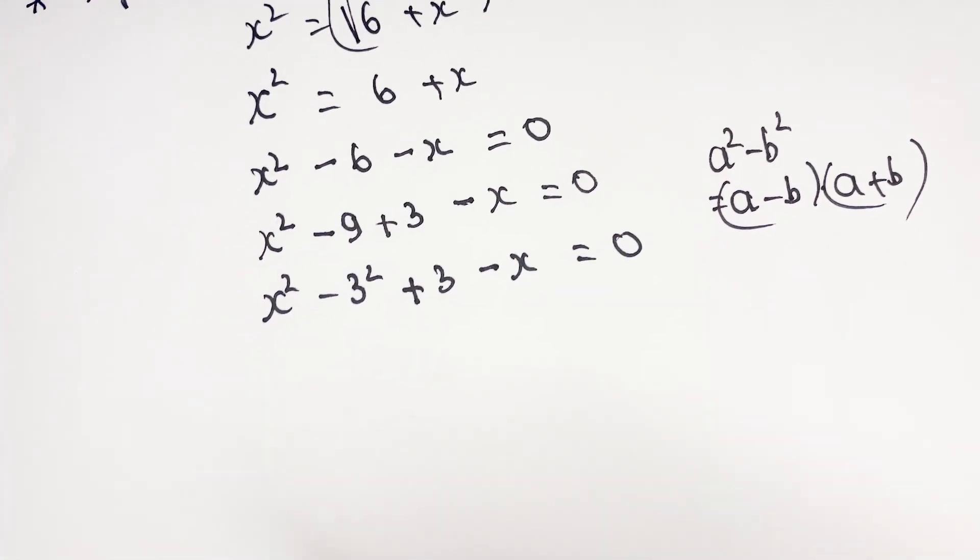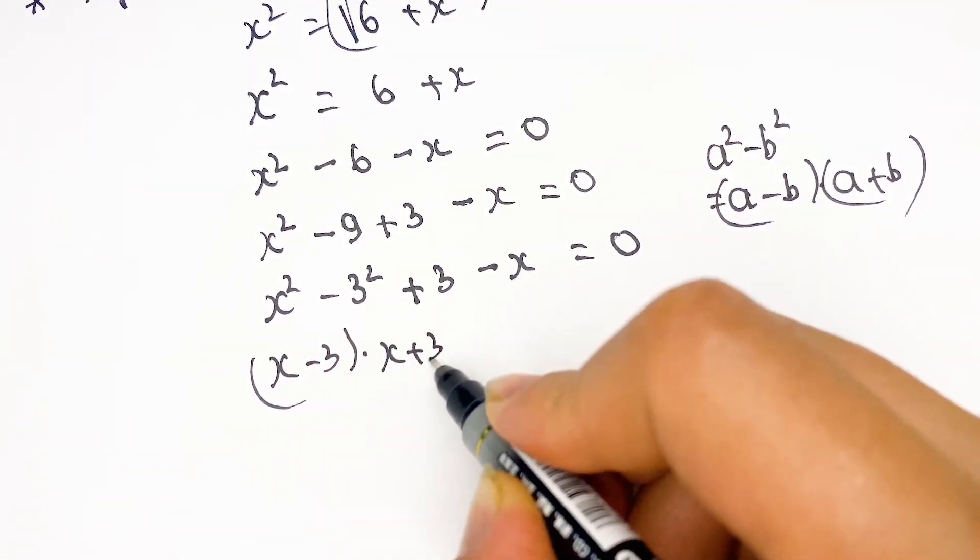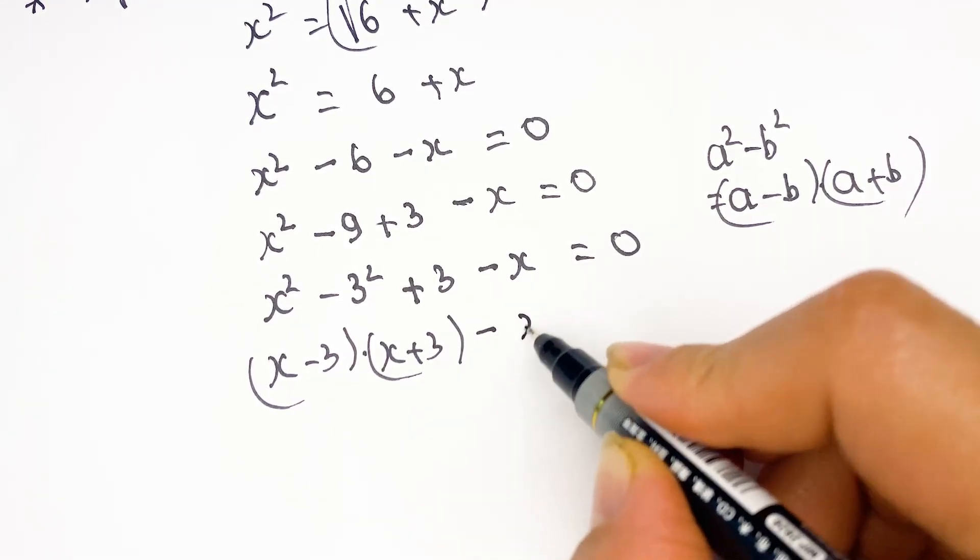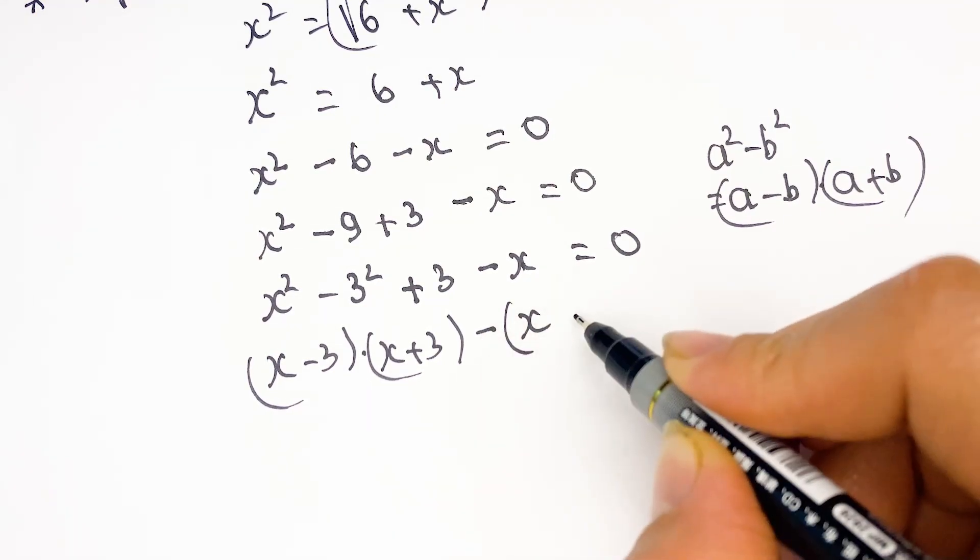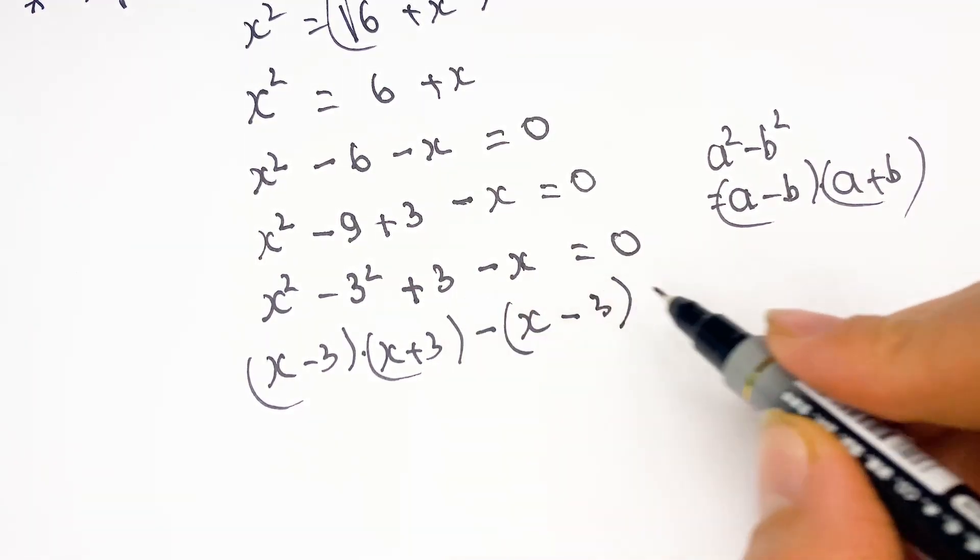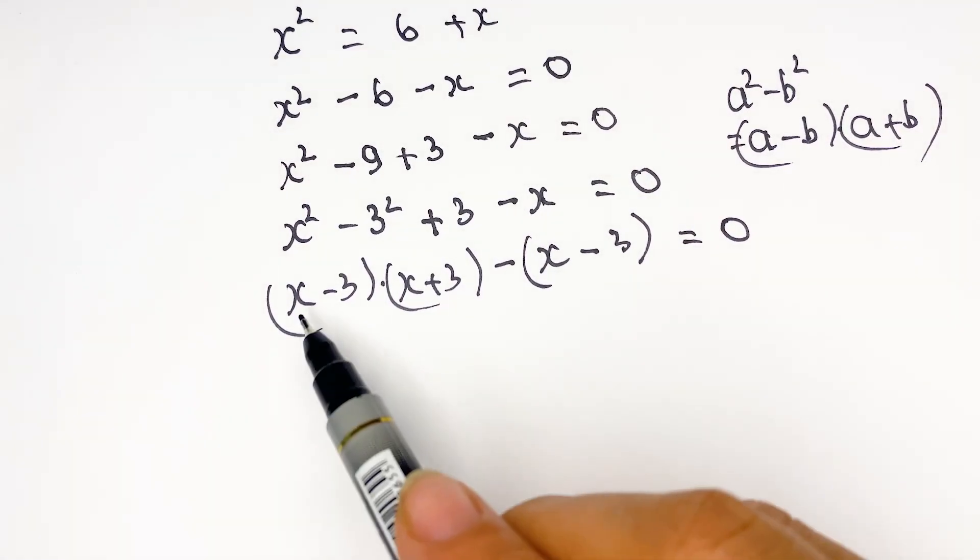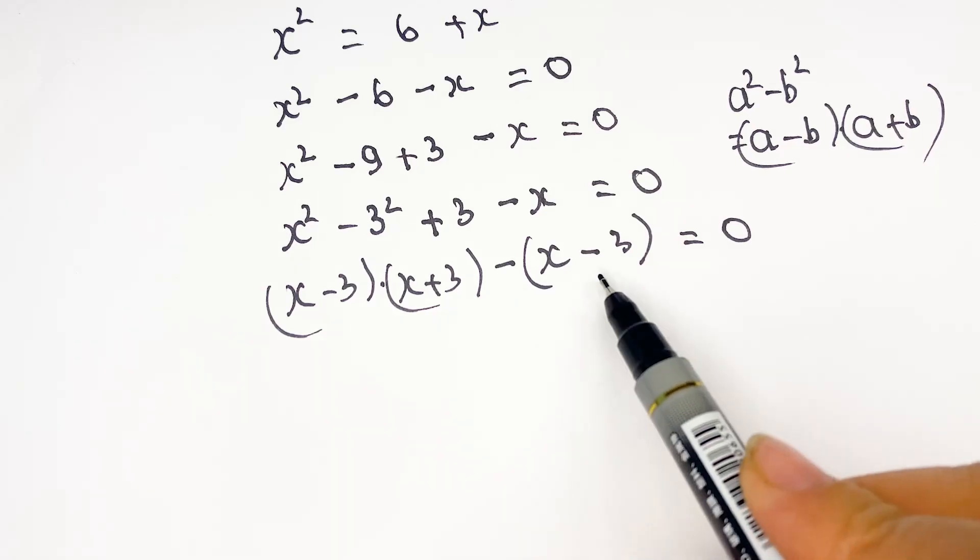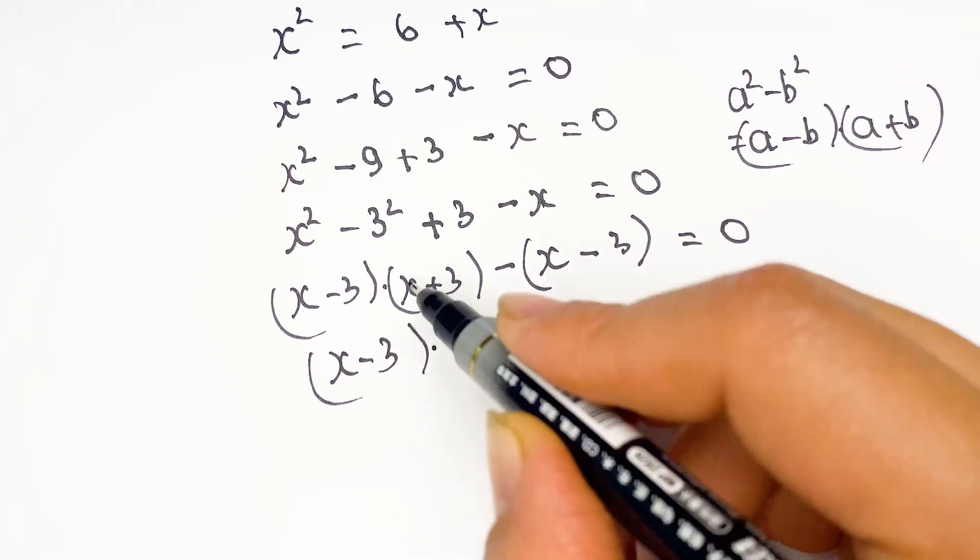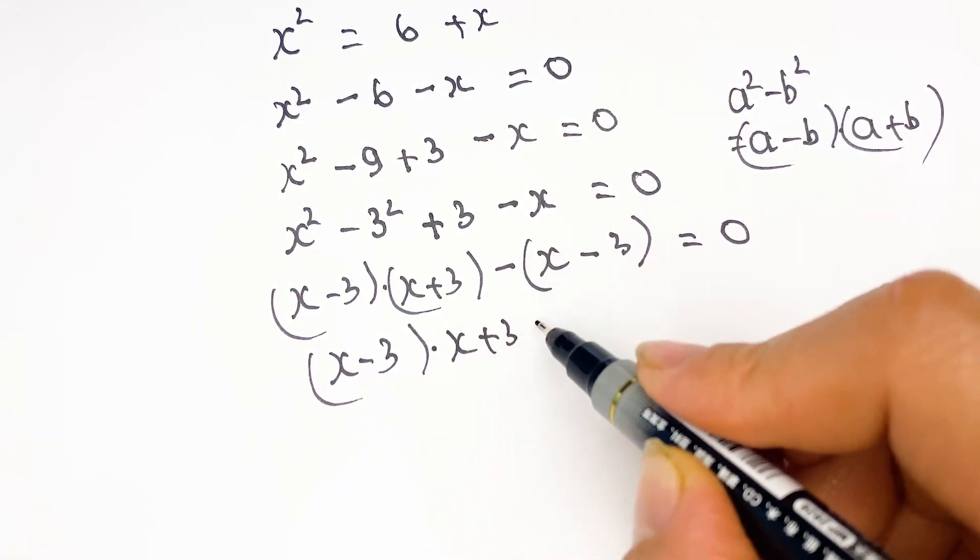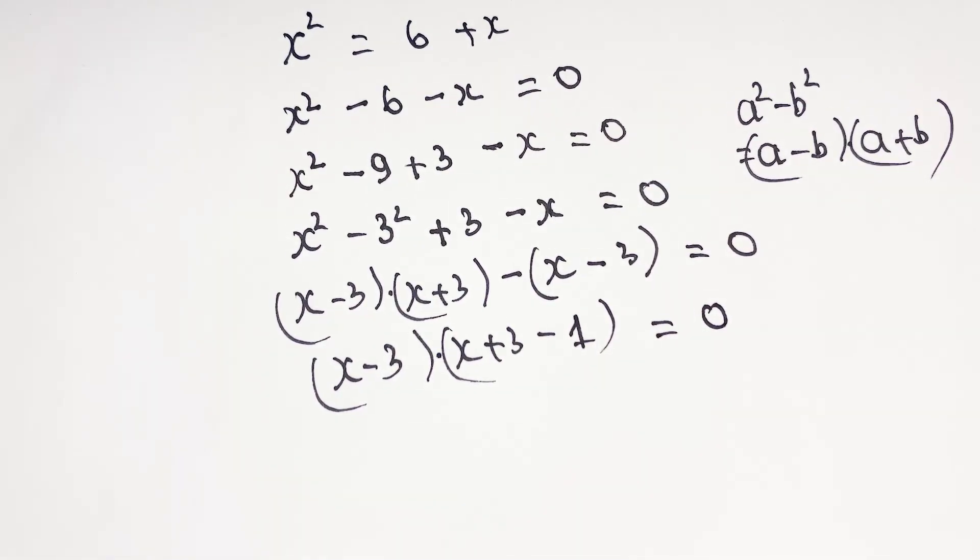We rewrite x minus 3 times x plus 3, minus x. If we rewrite x first, minus minus 3 equal to positive 3, equal to 0. Here, x minus 3 is a common factor. x minus 3 times x plus 3 minus 1 equal to 0.